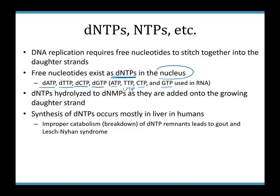Those DNTPs have three phosphate groups, and we remove two of them, hydrolyzing the DNTPs down to DNMPs — deoxyribonucleotide monophosphates — as we add nucleotides into the daughter strand. The vast majority of our DNTPs are made in the liver in humans, then exported to other cells. Our other cells can make their own DNTPs, but it takes time, so we specialize. We also have to break down any unused DNTPs.